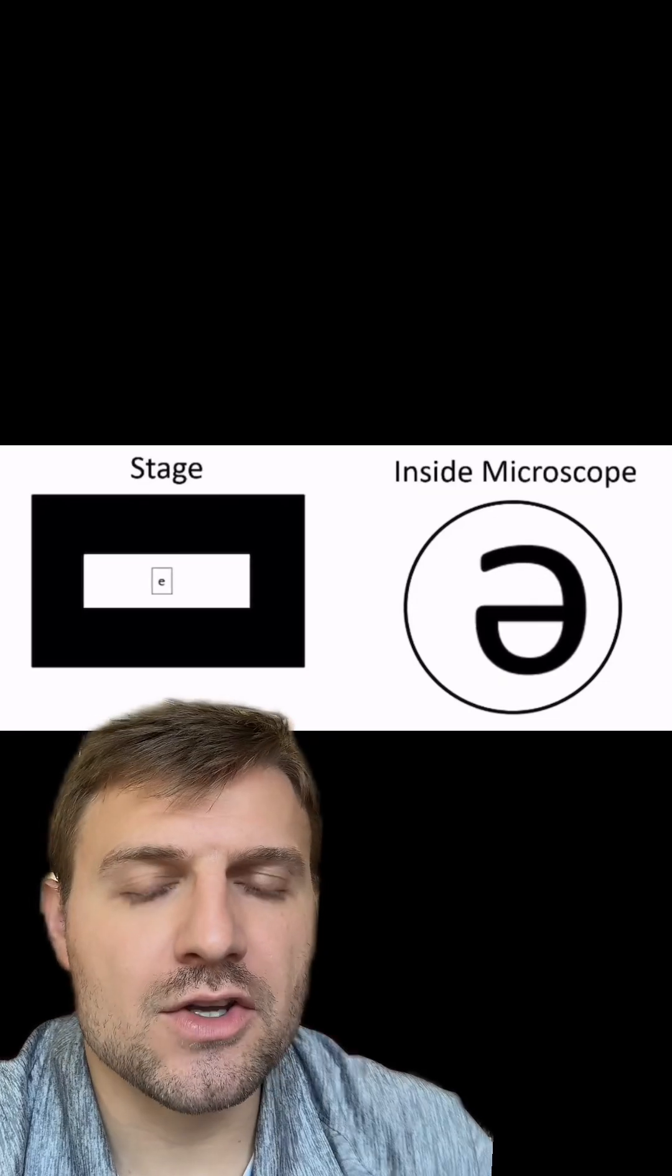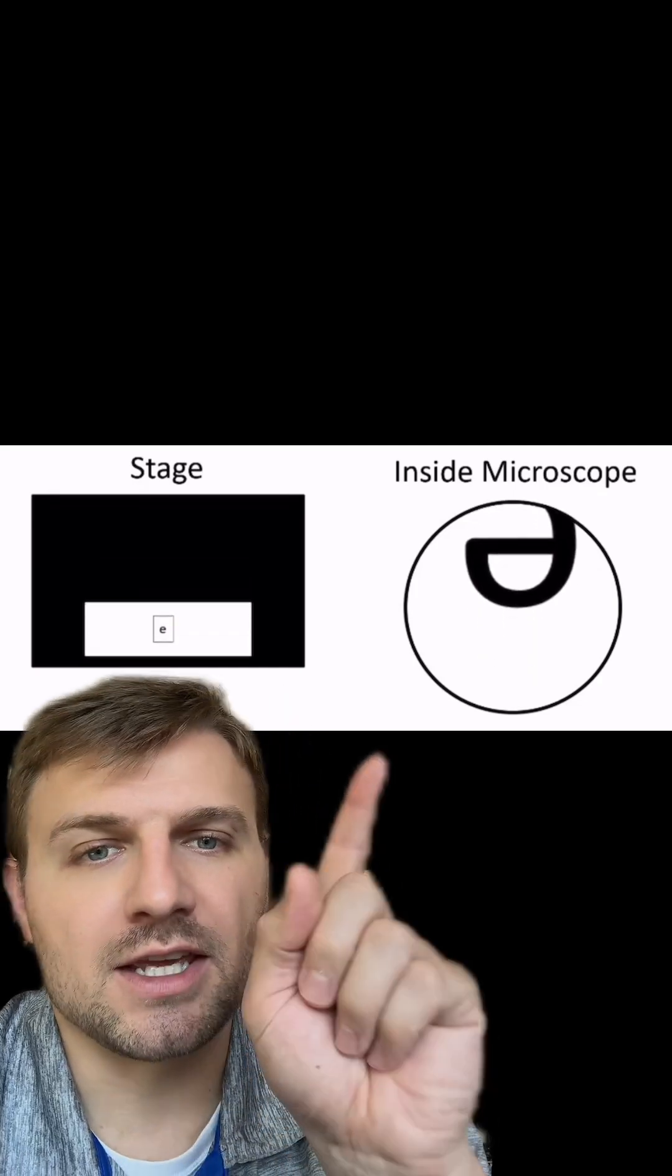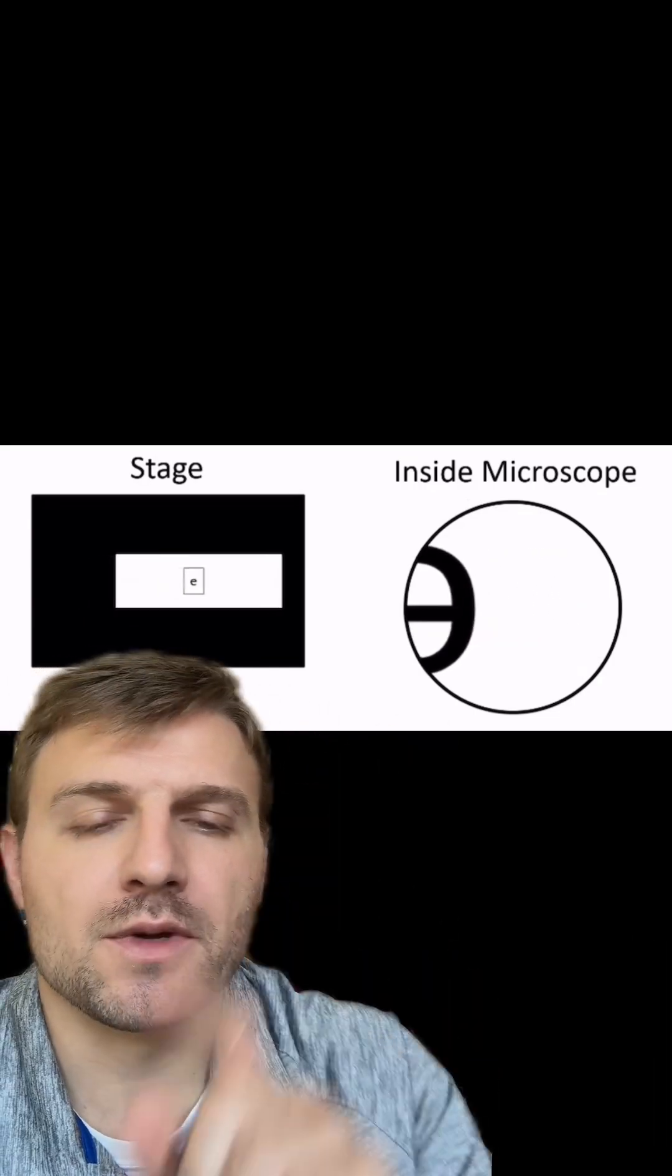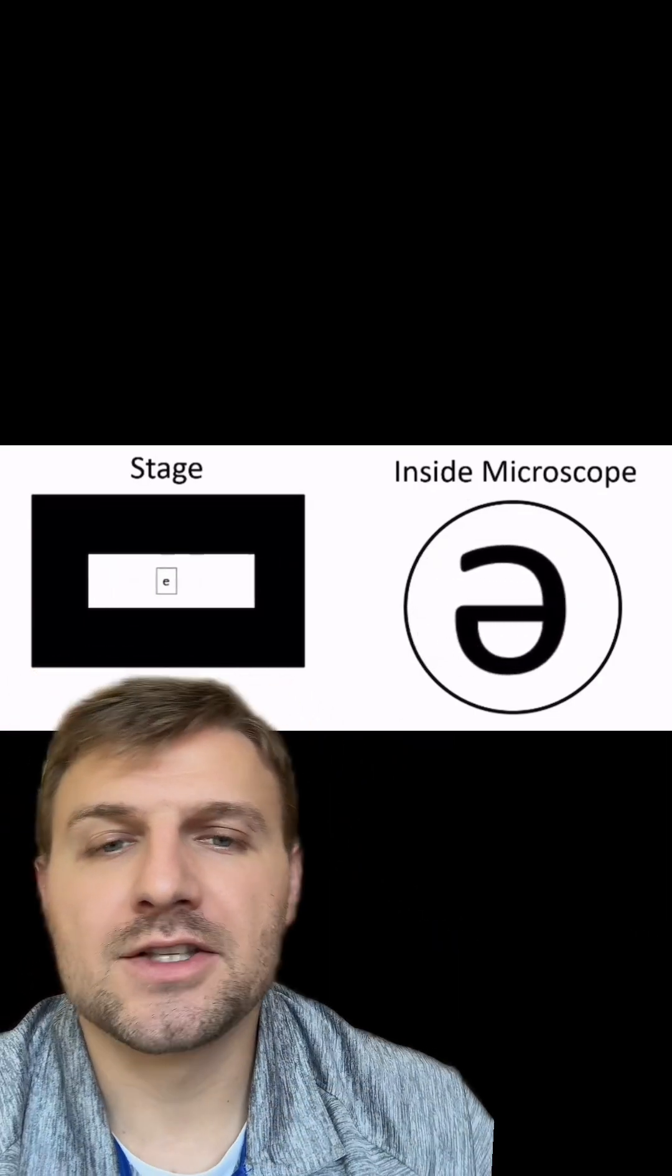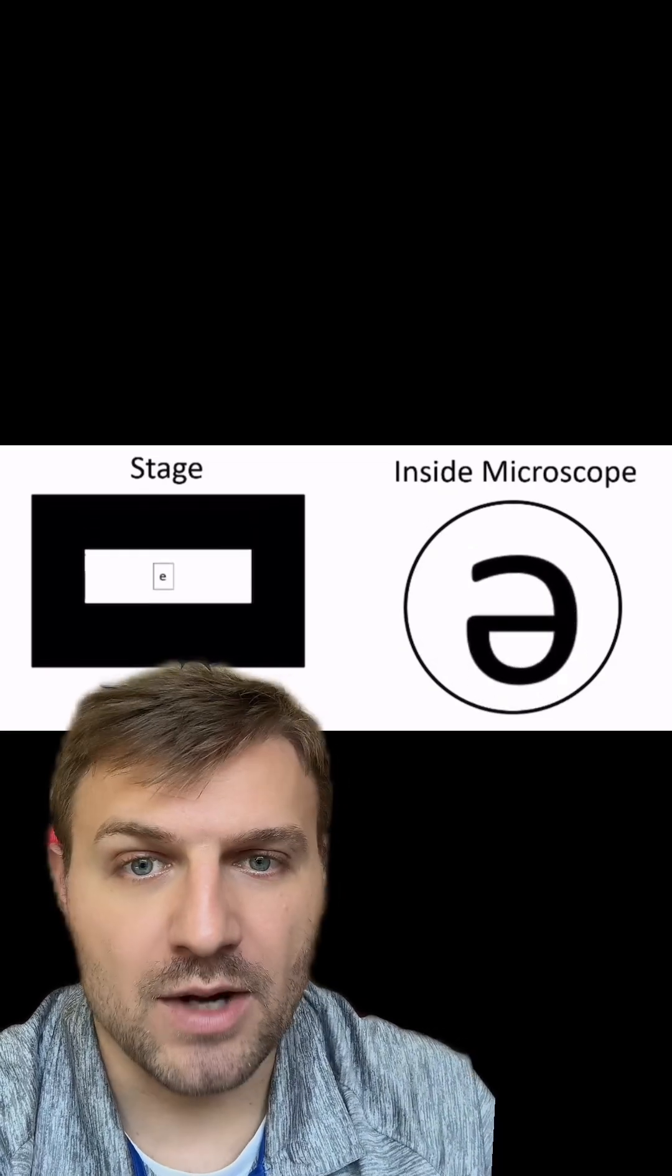You're also going to notice when you physically move the microscope slide on the stage, it's going to move in the opposite direction inside the microscope. You can see here, if we move it to the right, inside the microscope, it moves to the left. If you move it up, it's going to come towards you. This is because the mirrors in the microscope flip everything around.